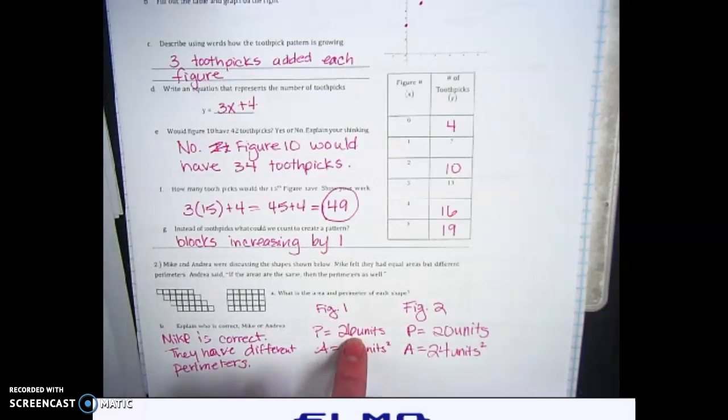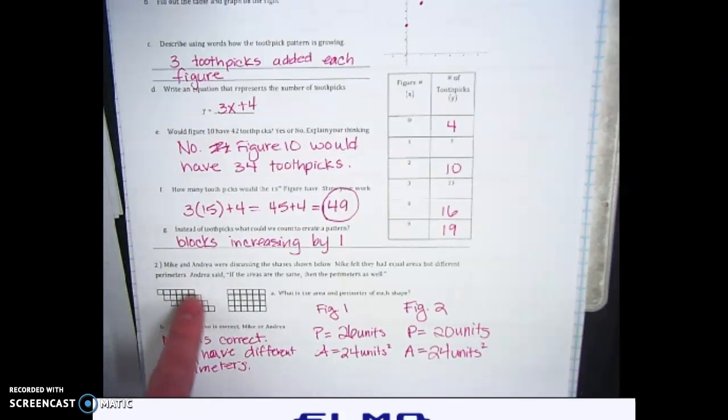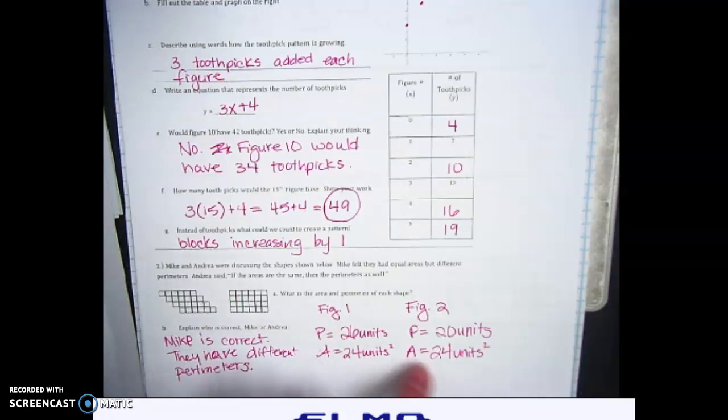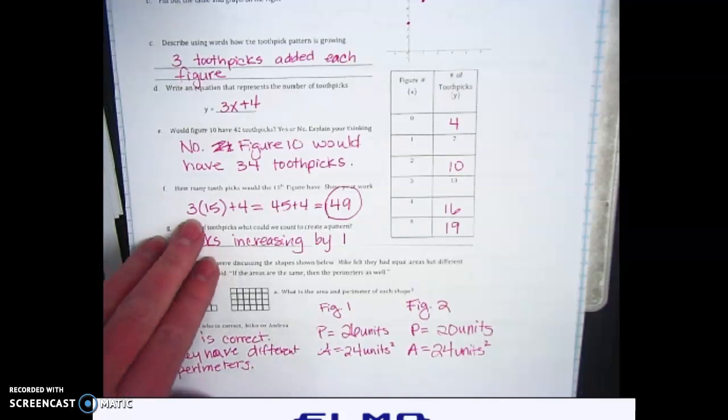So figure 1 had a perimeter of 26, I just counted the outside, and the area of 24, you count how many blocks. Figure 2 has a perimeter of 20, just the outside, and the area is 24, you count all the blocks. So explain who is correct, Mike or Andrea. Mike is correct, because they have different perimeters.